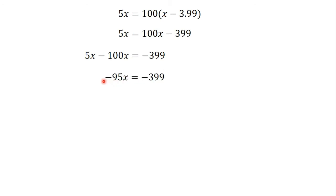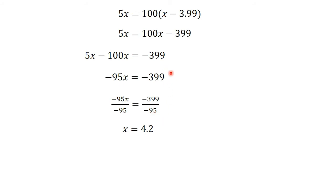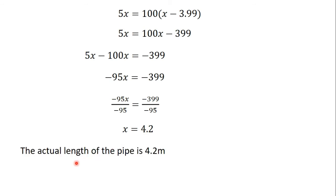We group like terms and simplify. When we do that we get minus 95x equals minus 399. Then we divide both sides by minus 95 and x gives us 4.2. This is all linear equation work, and we have solved many linear equations under the topic linear equations. Once you get to this level you open the brackets, group like terms and simplify, and x gives us 4.2.